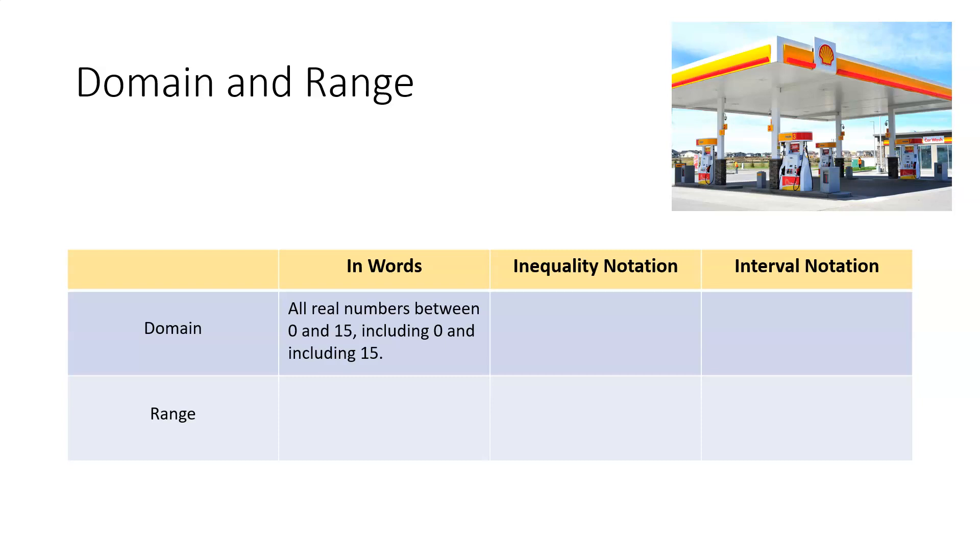So then they created inequality notation. And you've probably seen inequalities before. They kind of look like the alligator mouths, where the alligator mouth is pointing towards the larger number because it wants to eat the larger number. And so here, our domain is represented by this inequality. And the lines underneath the inequality symbols just represent that our domain includes the value 0 and includes the value 15.